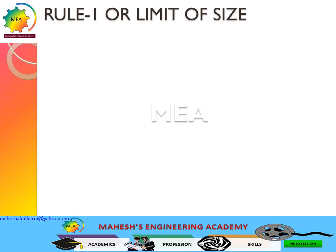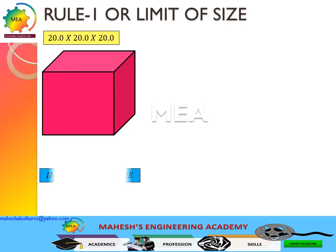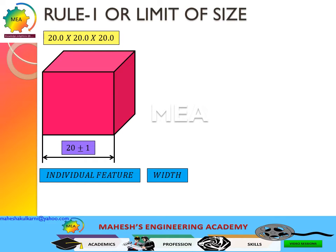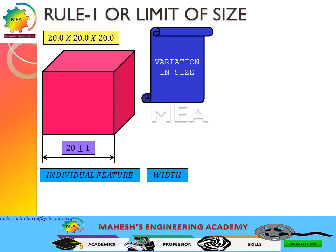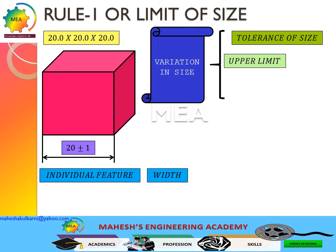Rule Number One, or the Limit of Size rule, states that when only a size tolerance is given and no other tolerance is given, the variation of size and variation of form is controlled by the size tolerance. Let us examine this with a case study. Consider a cube of 20 — an individual feature — with a width of 20 plus or minus one. The tolerance of size gives an upper limit of 21 and a lower limit of 19.